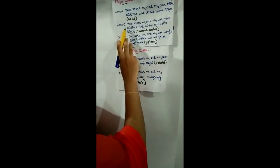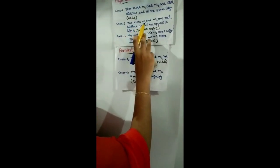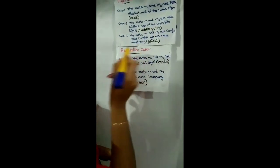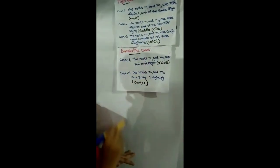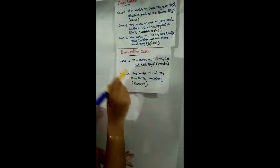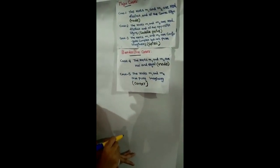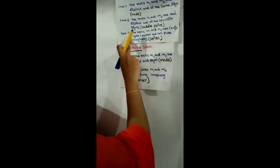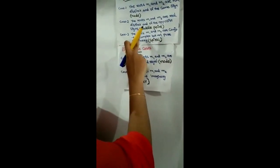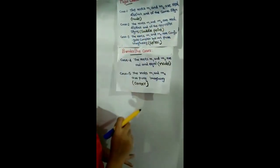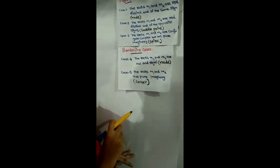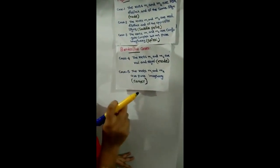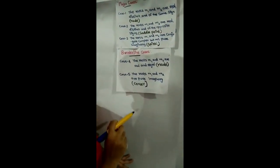Case 2: the roots m1 and m2 are real, distinct, and of opposite signs; then the critical point is a saddle point. Case 3: the roots m1 and m2 are conjugate complex but not pure imaginary; then the critical point is a spiral.